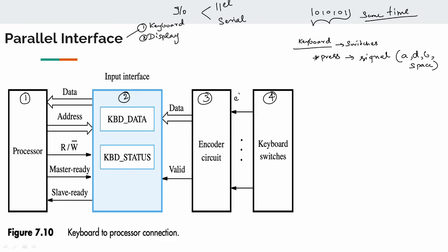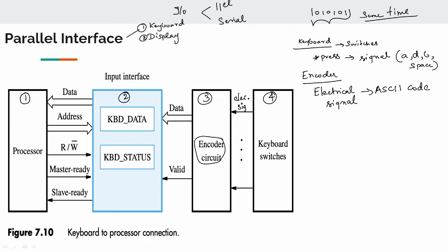So the keyboard generates an electrical signal. The processor also understands electrical signals. This signal is in binary format. The encoder circuit converts the key press into ASCII code — ASCII is a standard data format. So the electrical signal is converted to ASCII code by the encoder circuit.